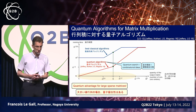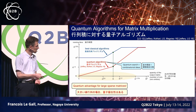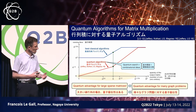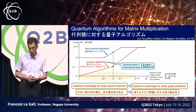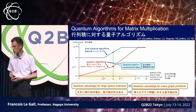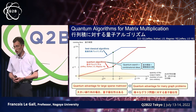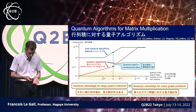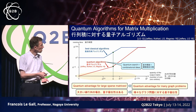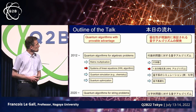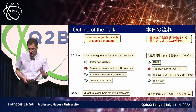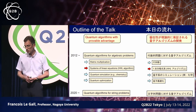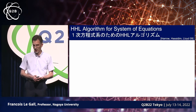Using this result, quantum advantage can be demonstrated for many graph problems as well. This was a successful outcome in our research.